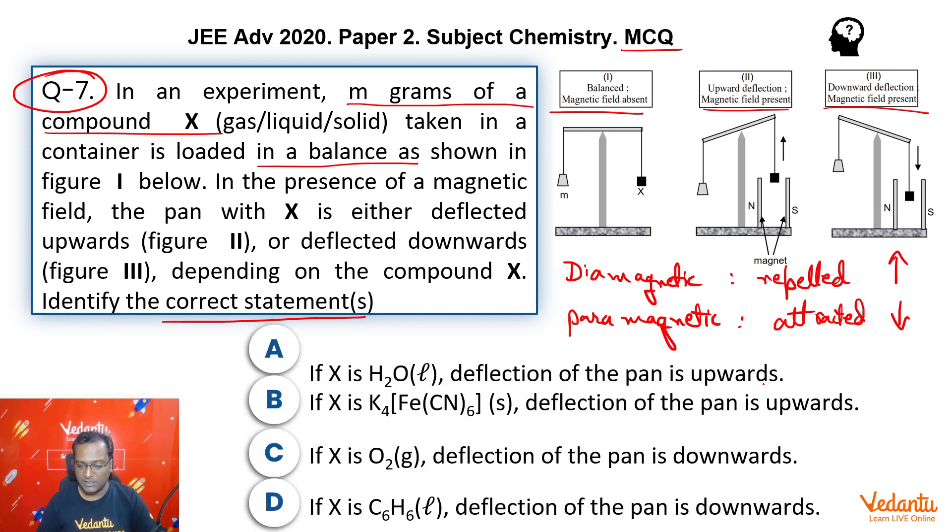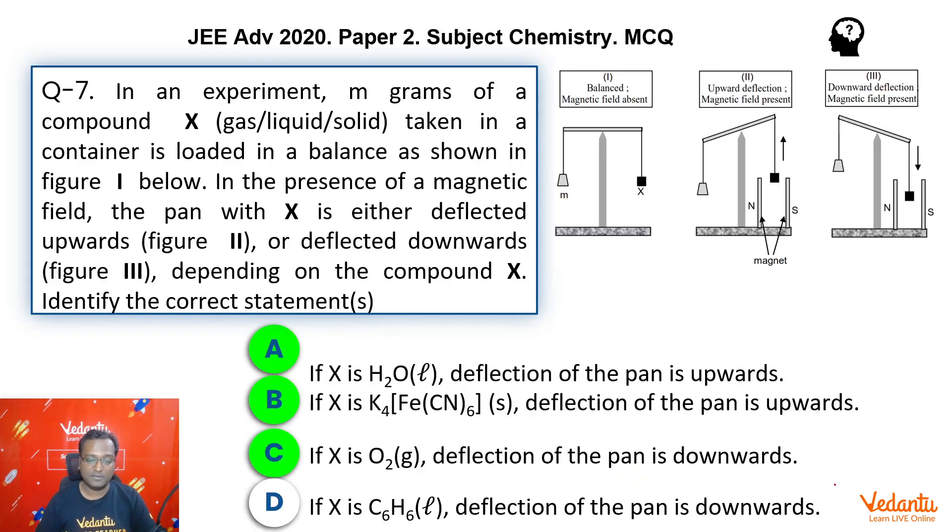So let's go back to the question. Water deflected up - correct. K4[Fe(CN)6] deflected up - correct. O2 paramagnetic deflected down - correct. And yes, deflection of pan is down for benzene? No, benzene was diamagnetic. So deflection will be up. Hence the answer here is A, B and C.